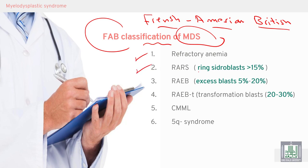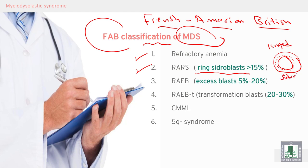Ringed sideroblasts more than 15% — sideroblasts accumulated around the nucleus. This is called ringed sideroblast, more than 15%. This is a subtype, a special type of MDS.